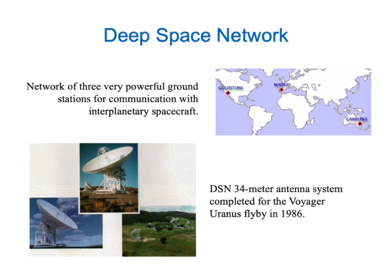Of course, the ground side of this equation is the communication system on Earth. The United States uses something called the Deep Space Network, which is a network of three very large radio antennas that can communicate with spacecraft even out beyond Pluto.